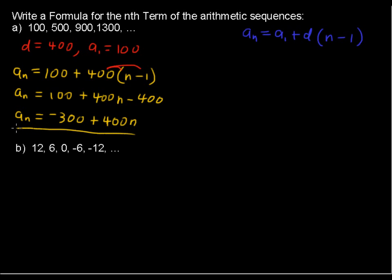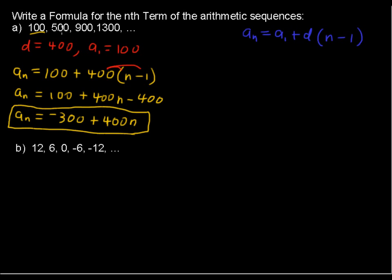That seems a little odd to look at, but let's think about what's happening. If we plug in 1 for n — that is, if we're finding the first term — we get 400 times 1 plus negative 300, which is 400 minus 300, giving us our first term of 100. So this formula does work, and you can plug in n equals 2, n equals 3, and so on.